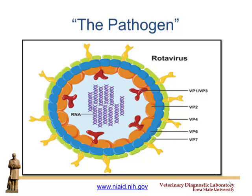For a schematic: VP7 is on the outer layer, and VP4 is this spike-looking structure — those are the two outer ones. The middle one in blue is VP6, which gives you the A, B, or C classification. Then we have our inner layers before we get to the RNA on the inside. It's a pretty simple structure, but the structure causes a lot of problems when it comes to immunity — remember this three-layered concept.